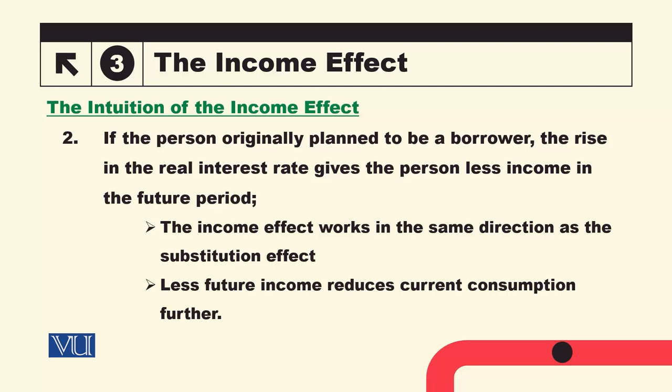اگر وہ lender ہے تو income اور substitution effect opposite direction میں move کرتے ہیں۔ لیکن اگر وہ net borrower ہے تو دونوں ایک ہی direction میں move کریں گے — interest rate بڑھنے کی وجہ سے current consumption expensive ہوگی اور وہ کم کر دے گا، اور borrower ہونے کی وجہ سے زیادہ payment کرنی ہے تو relatively poor ہو گیا، تو اس وجہ سے بھی current consumption کم ہو جائے گی۔ Future income reduces current consumption further۔